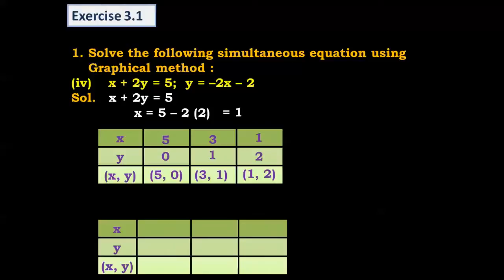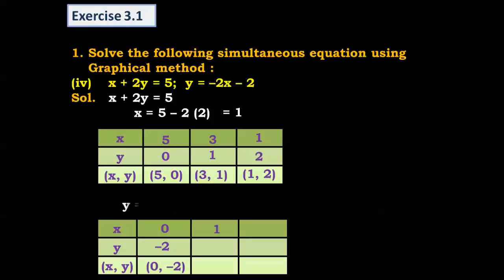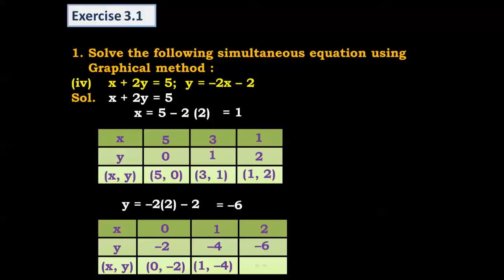For the second equation y = -2x - 2: when x = 0, y = -2(0) - 2 = -2, giving point (0, -2). When x = 1, y = -2(1) - 2 = -4, giving point (1, -4). When x = 2, y = -2(2) - 2 = -6, giving point (2, -6). We now have the set of coordinates for both lines and can plot the graph.